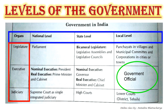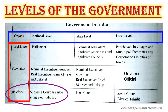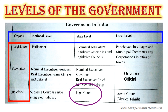The last organ is the Judiciary. At the national level, there is the Supreme Court as a single integrated judiciary. At the state level, there are High Courts. At the local level, there are lower courts such as District Courts or Tahsil courts.